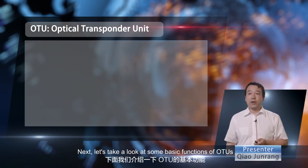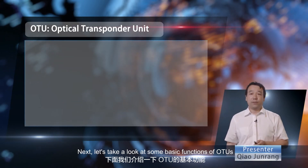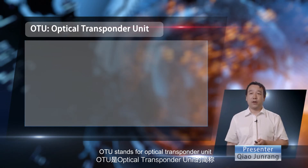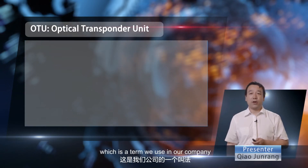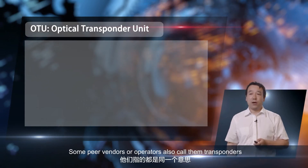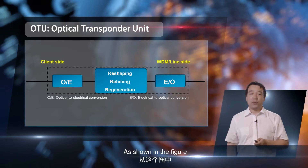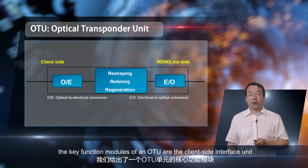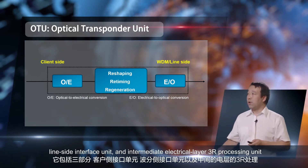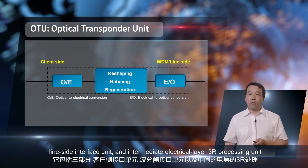Next let's take a look at some basic functions of OTUs. OTU stands for optical transponder unit, which is a term we use in our company. Some peer vendors or operators also call them transponders. As shown in the figure, the key function modules of an OTU are the client-side interface unit, line-side interface unit, and intermediate electrical layer 3R processing unit.